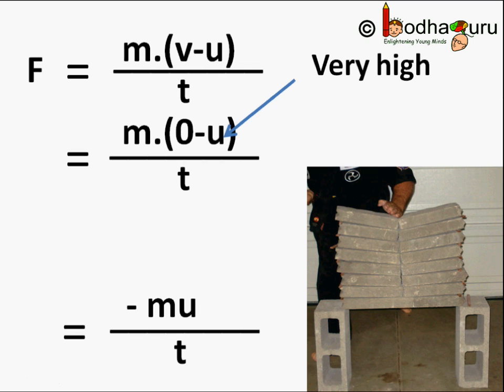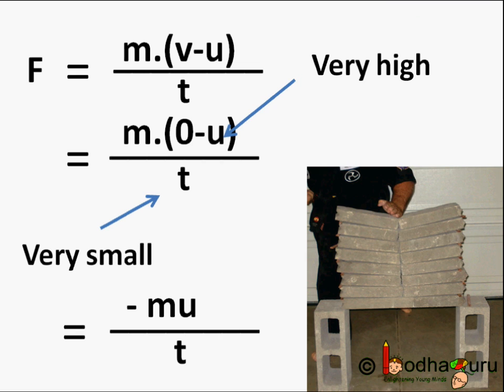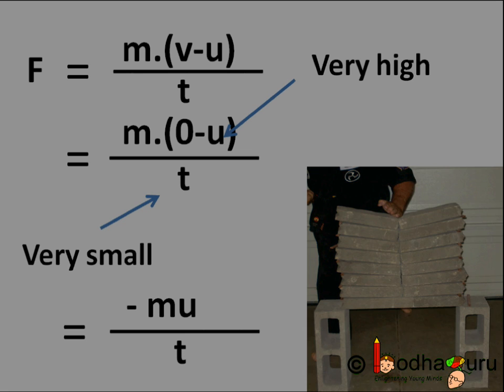But, if you see, u was very high as he hit the slab very fast. t is very small as the hand changes its momentum to zero in a fraction of a second. So, the value of force is very high which means this method enables him to exert very high force on the slab and thus he is able to break the slab into pieces.